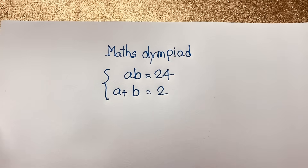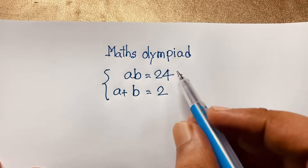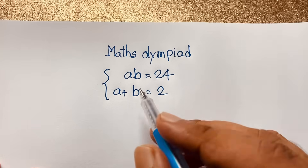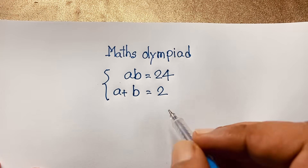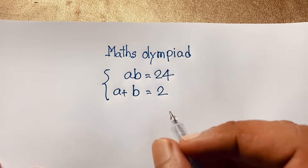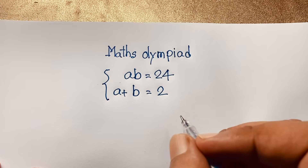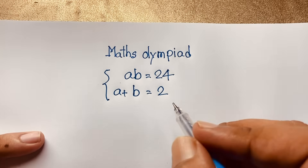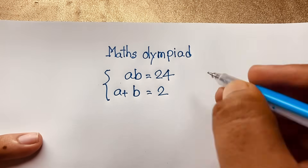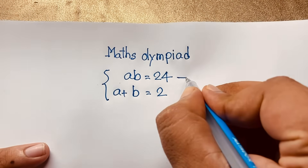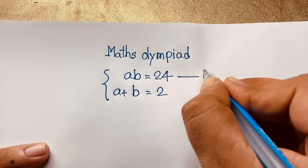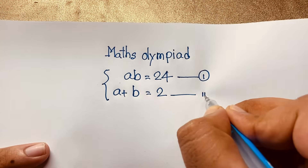Hello everyone, welcome to Russell's classroom. Today we are solving an interesting math olympiad question. Here: ab is equal to 24, a plus b is equal to 2. And ab is equal to what? How to solve this interesting math problem? This is our first equation and this is our second equation.